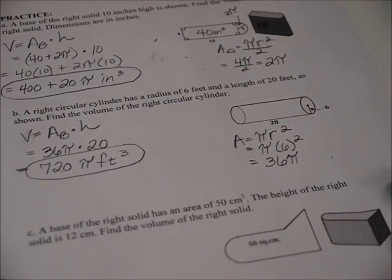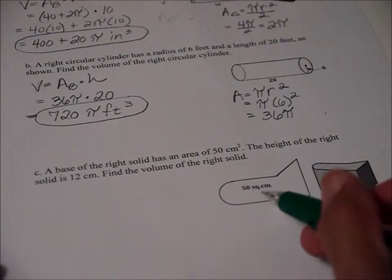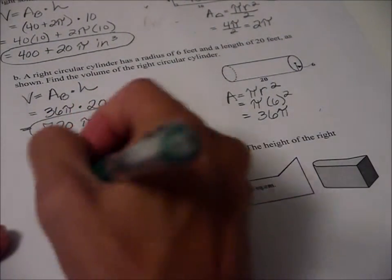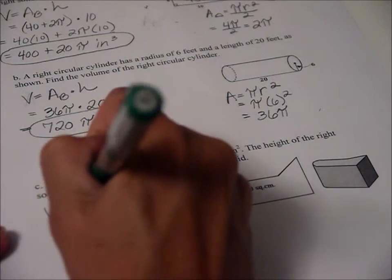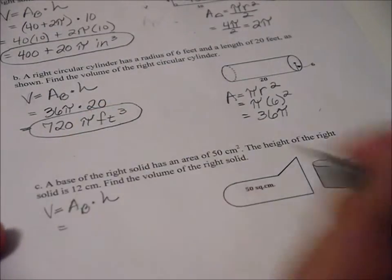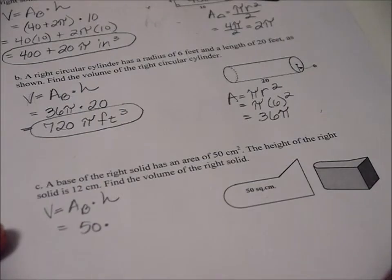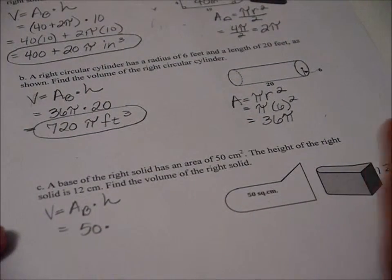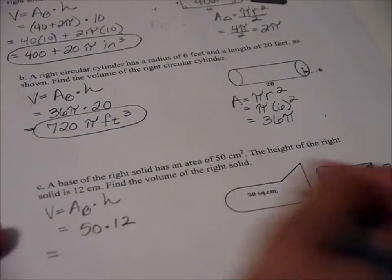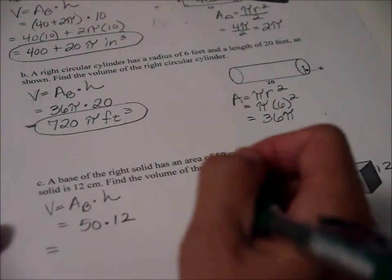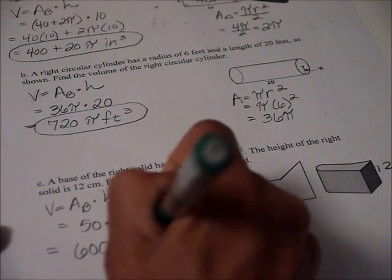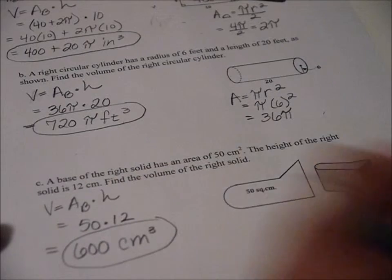Now the last one looks terrible, but it's, again, one of our shortcut ones because here they are. They gave us an area already. So volume equals area of the base times height. Area of the base is 50. Our height is 12. I'm going to write that. 50 times 12. Well, 5 times 12 is 60. So 50 times 12 is 600 centimeters cubed. So that one was, and it's funny, the last one's usually harder, but it wasn't.